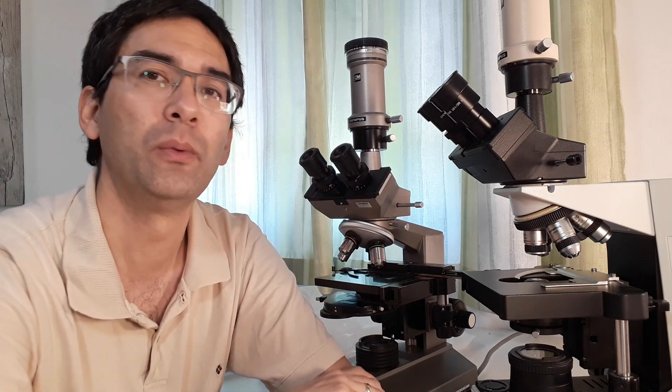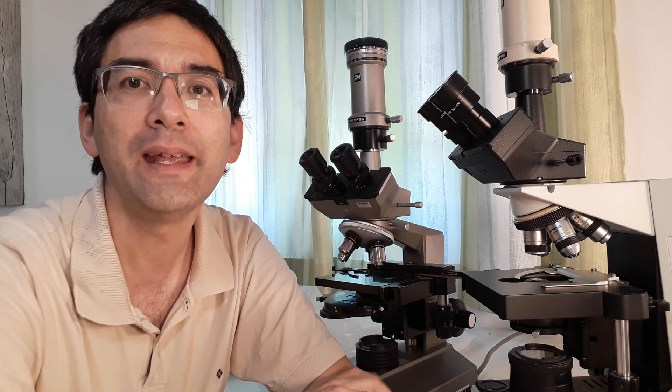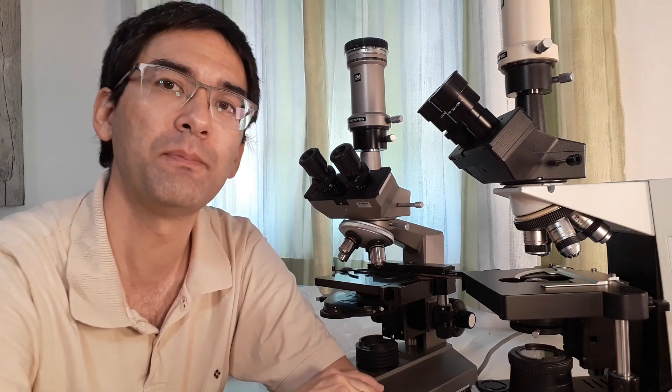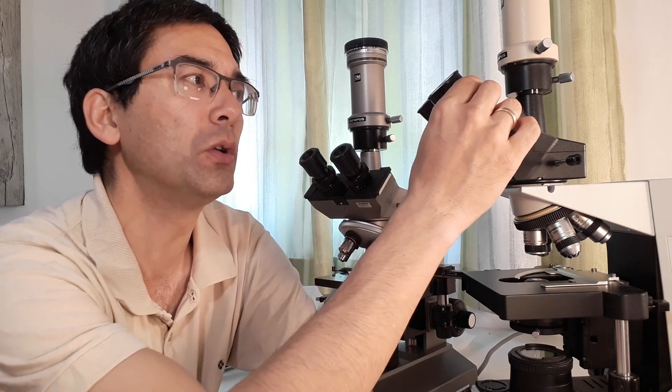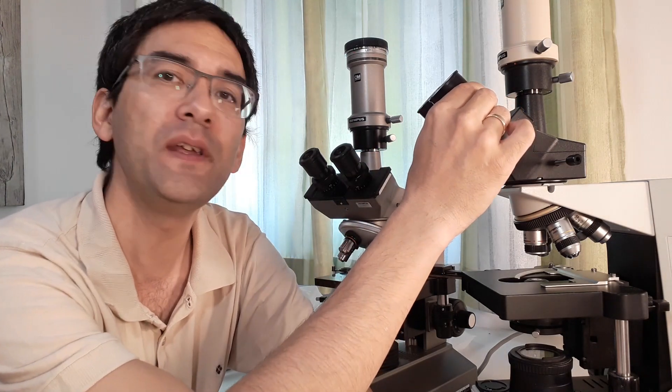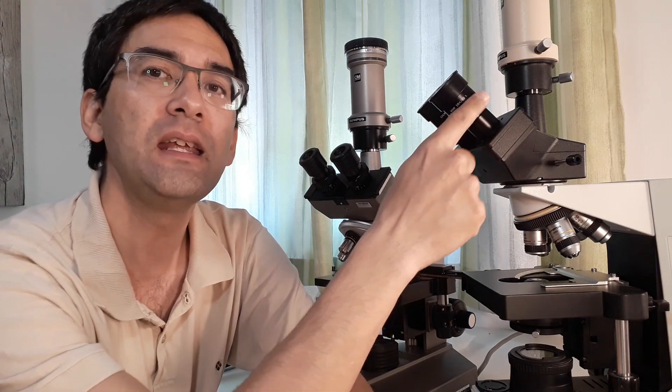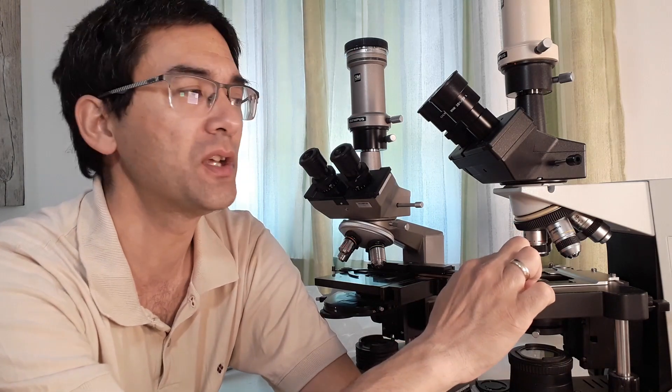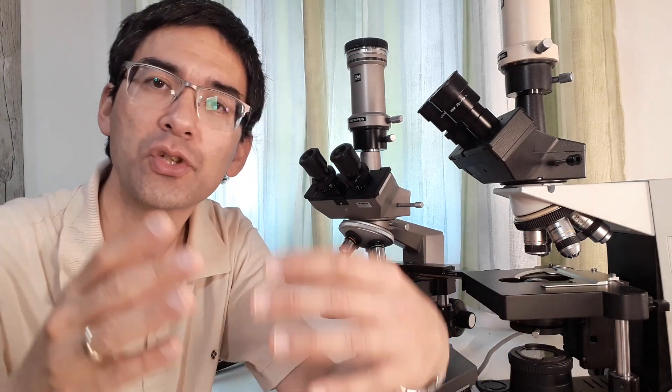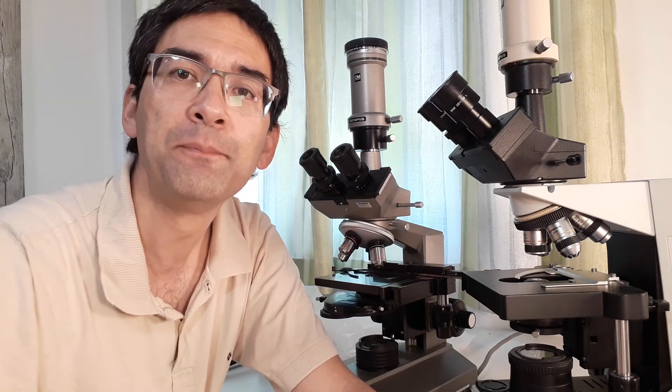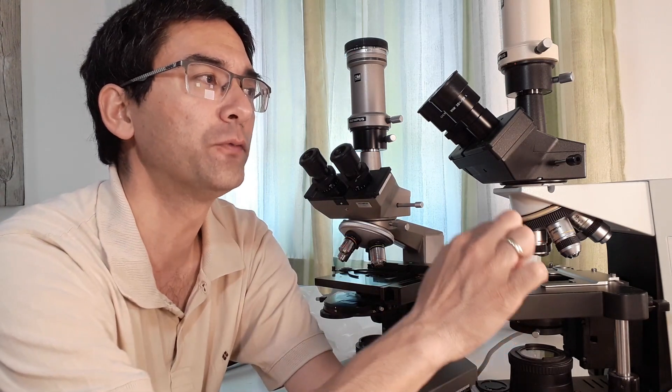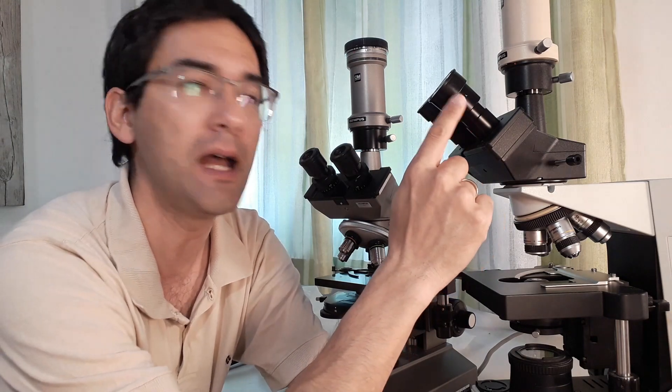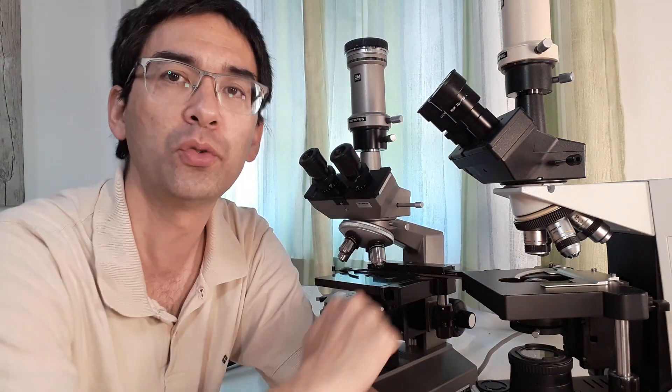However, there's also a second reason. The high-end microscope manufacturers produce so-called compensating eyepieces that correct lens errors, for example chromatic aberration, which the objective produces. Chromatic aberration gives you color fringes around the objects, but these color fringes are removed, or at least partially removed, by the eyepiece.